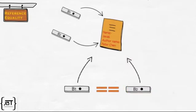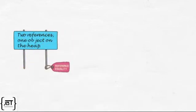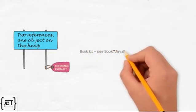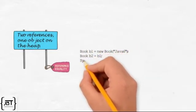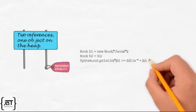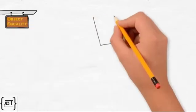Therefore, b1 == b2 will return true. So, reference equality means two references, one object on the heap. Let us look at the code now. b1 is a reference variable of class Book. b2 also refers to the same book object. b1 == b2 will return a value of true.